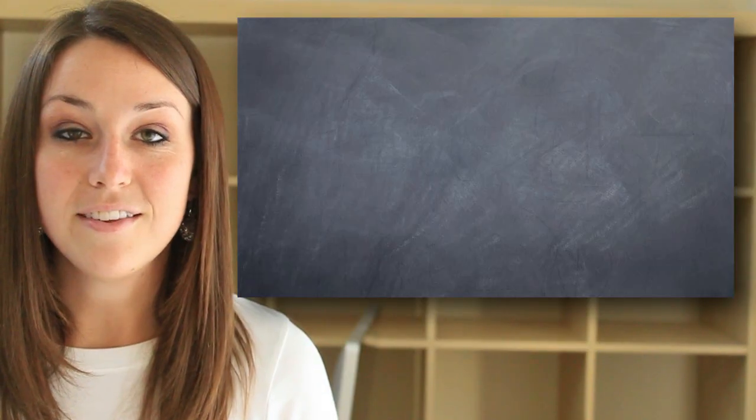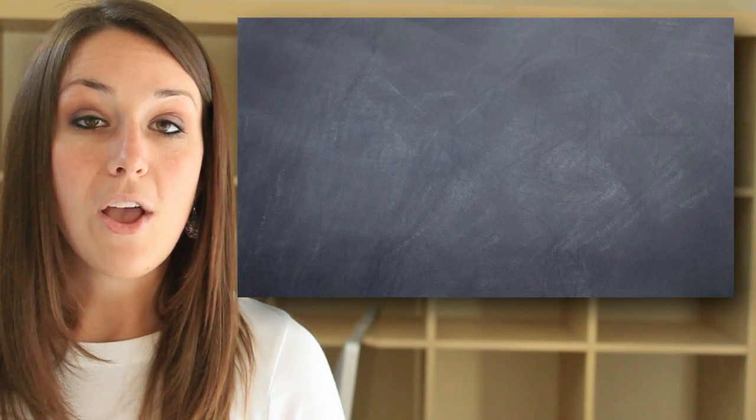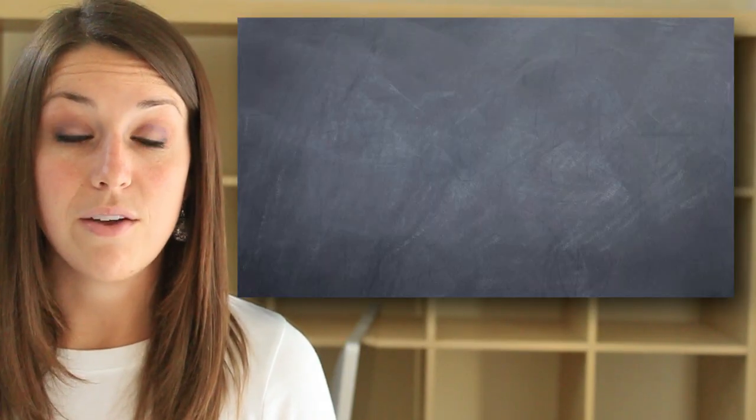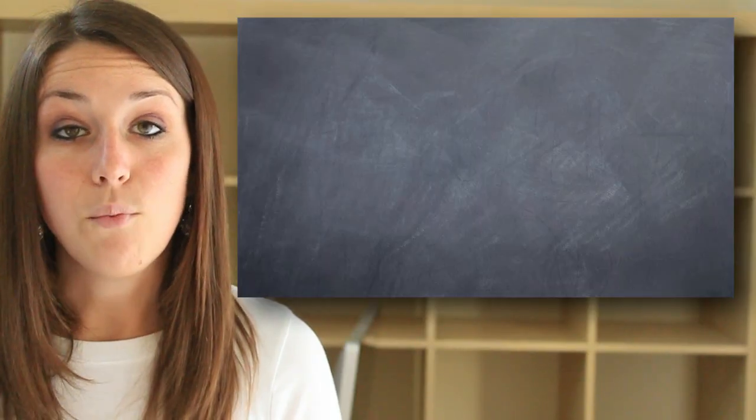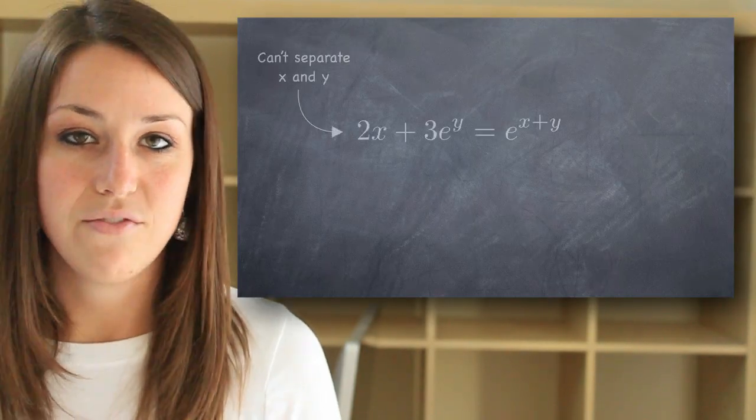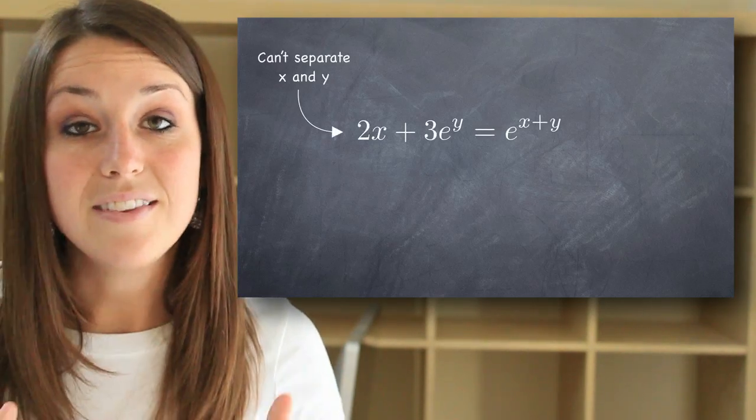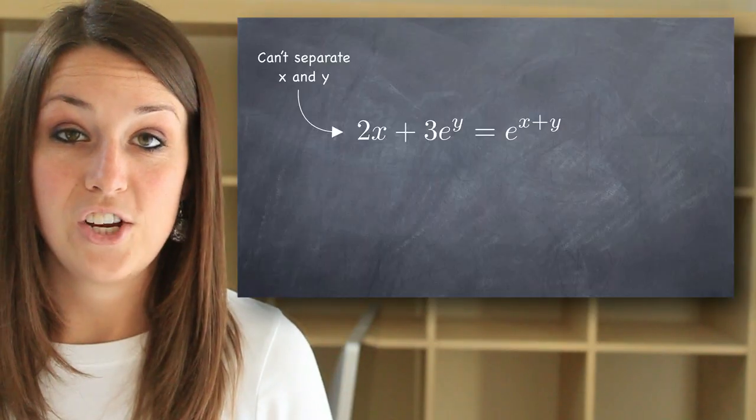Before we jump fully into related rates, we need to understand the concept of implicit differentiation. We already know from previous sections that we have no trouble calculating a derivative if the left-hand side of our function is y or f of x and the right-hand side is something in terms of x. But what do we do if we don't have that kind of clean separation, where we can't get all of our y's on the left separate from all of our x's on the right? That's where implicit differentiation comes in.